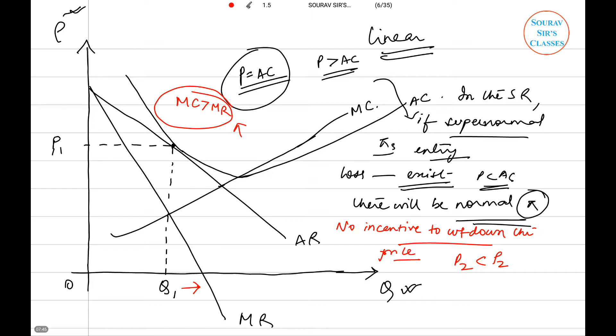Since you will not cut down the prices, there is no incentive to entry or exit. Since you are not making a loss you will not exit. Since you are not making any supernormal profit you will not enter. This will denote the long run market equilibrium. In the long run market equilibrium the firms earn zero profit. There is no incentive to enter and there is no incentive to exit either.